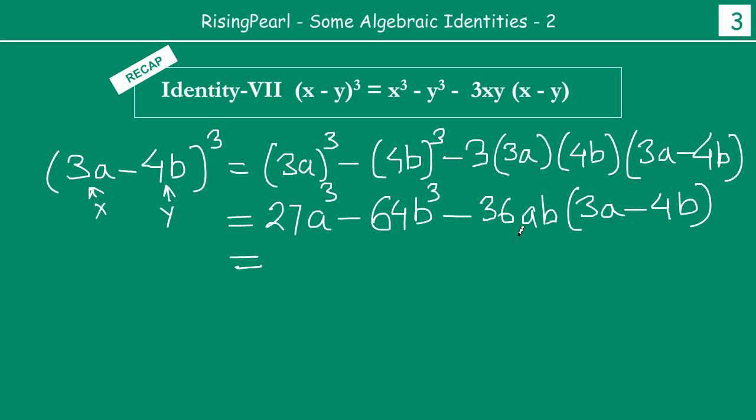And the last step is basically to open up the bracket, so you write 27a cube minus 64b cube minus, if you multiply, 36 times 3a, you can think about it this way: 3 times 6a is 18, 1 carry over, and 3 threes are 9 and 1 is 10, so 108, a times a will be a square, then b, and the last term is minus times minus is plus, 36 times 4, so 4 times 6a is 24, 2 carry over, and 4 threes are 12 and 2 is 14, this will be 144, then a and b times b is b square. So this is the expanded form of 3a minus 4b whole cube.